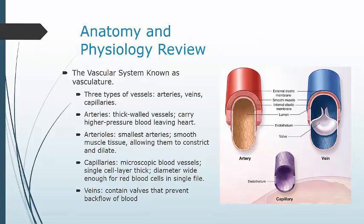Blood vessels are arranged in two main circuits: the pulmonary circuit and the systemic circuit. The pulmonary circuit starts at the right ventricle, carries deoxygenated blood through the pulmonary arteries to the lungs, where gas exchange occurs in capillaries surrounding the alveoli, and returns oxygenated blood via the pulmonary veins to the left atrium. The systemic circulation begins at the aorta, receiving blood from the left ventricle, traveling through the aortic arch and descending aorta, where larger arteries branch off to supply the body.